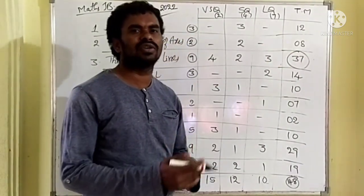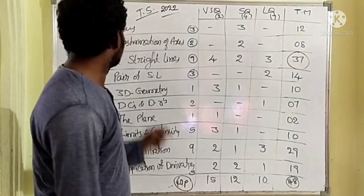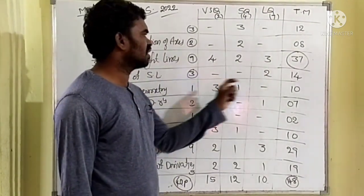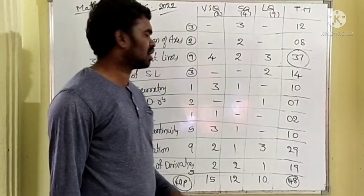Because now, we have only 27 marks pass marks. Pair of straight lines, 3 parts available. 2 long questions, 14 marks.